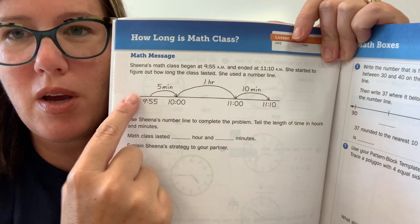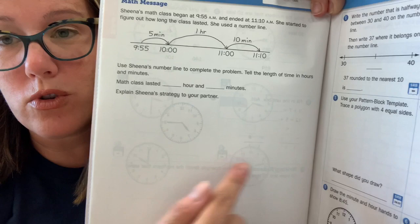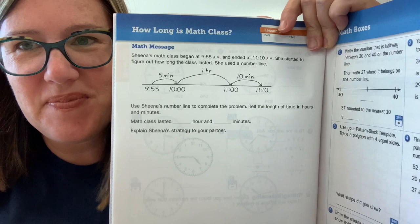See if you can use her number line to figure out how long it was. How many hours and how many minutes. You may want to draw your own number line below because you might do the math a little bit differently.